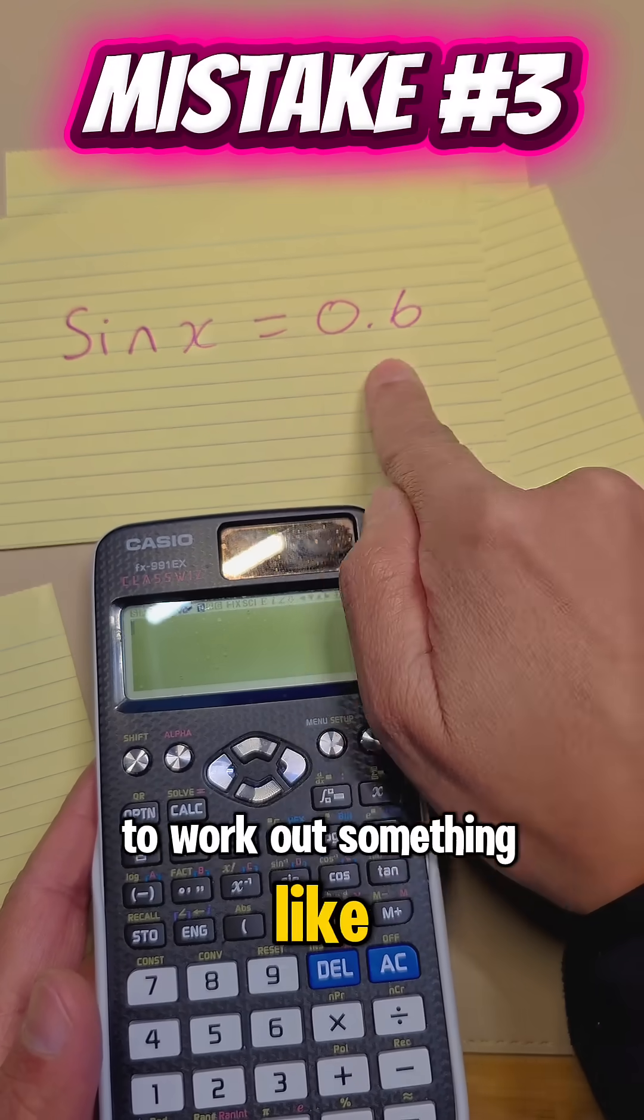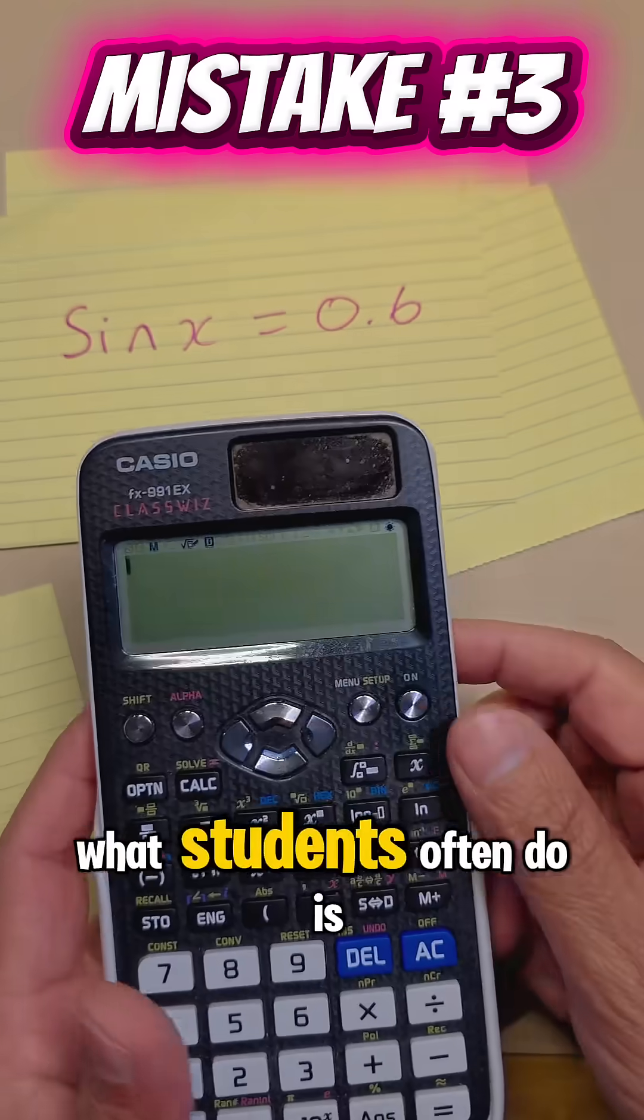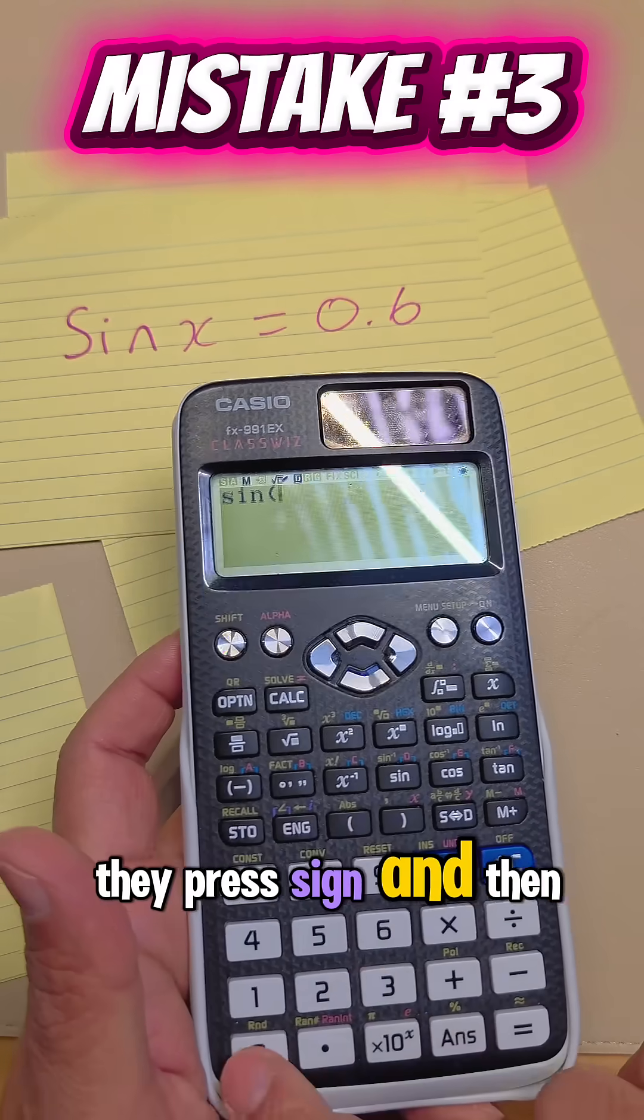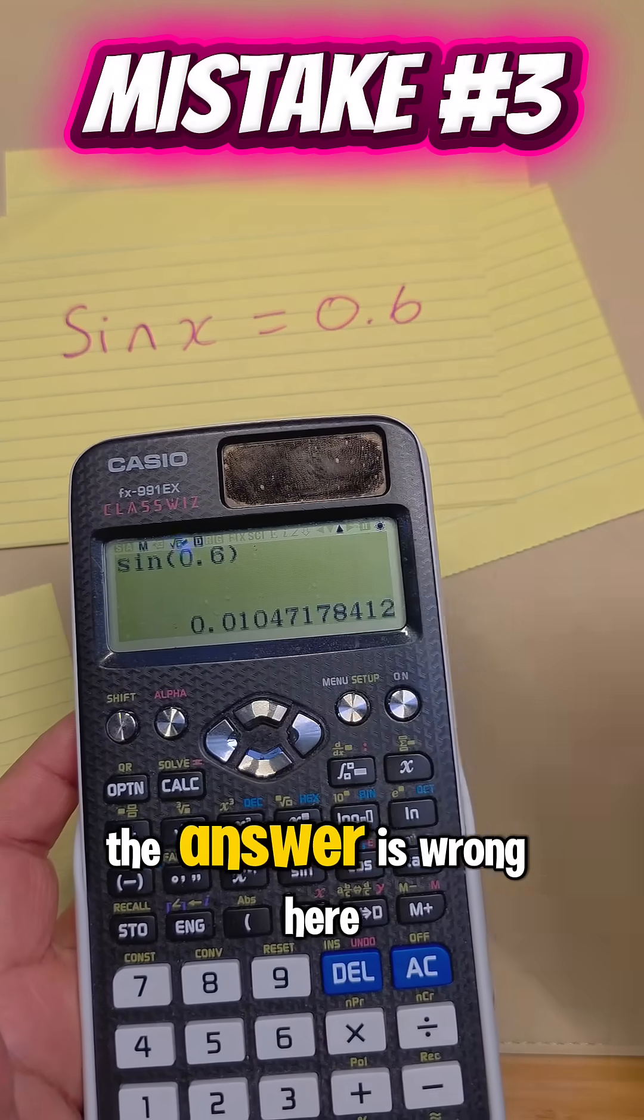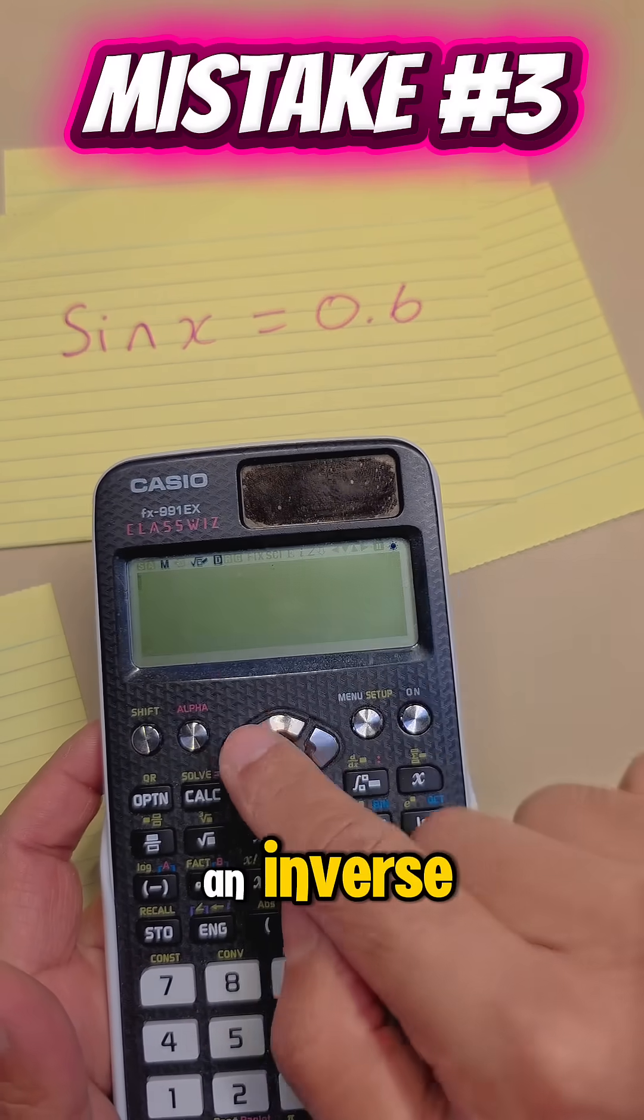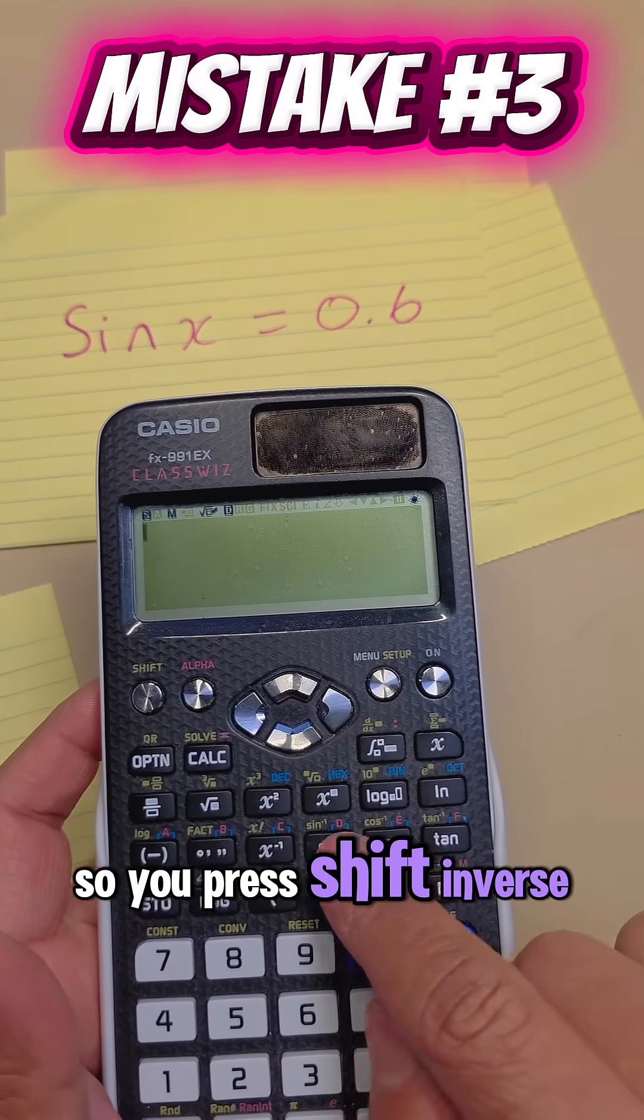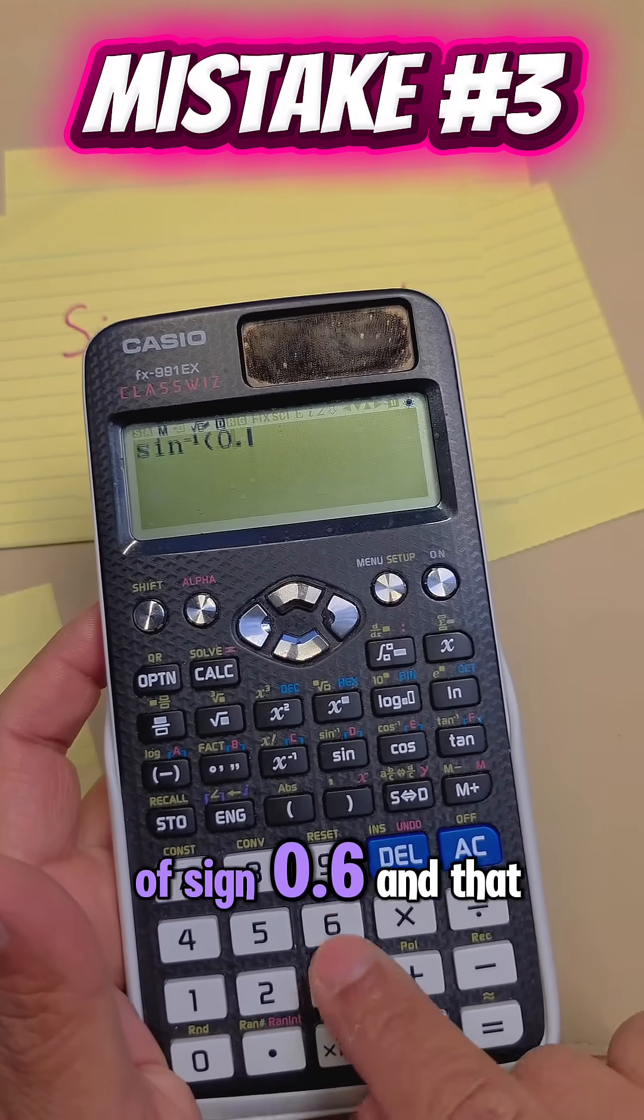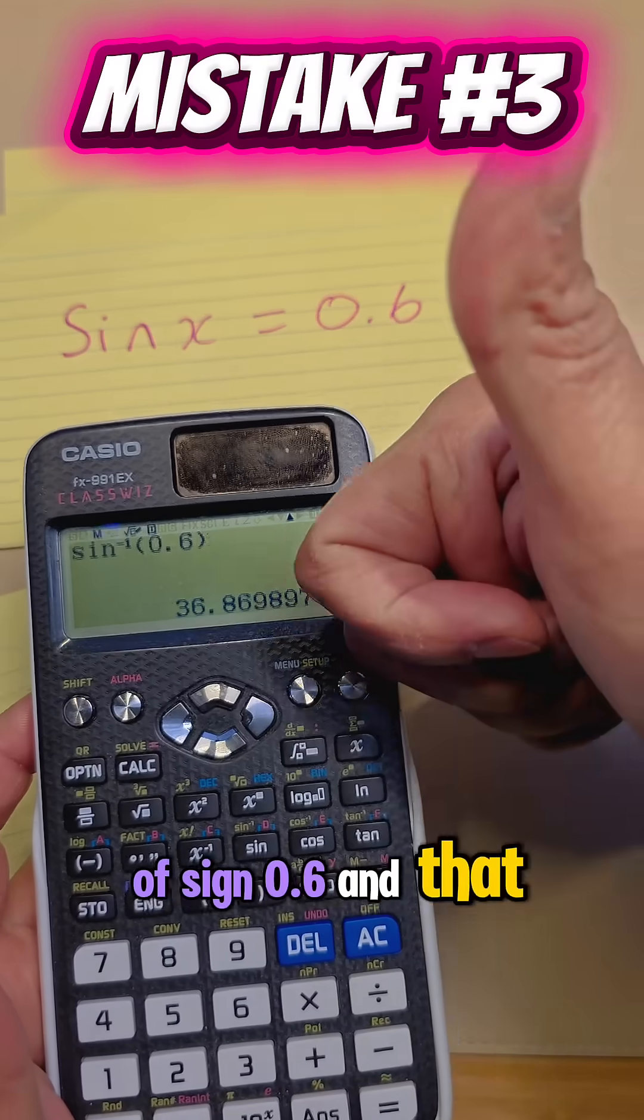The next one is trying to work out something like this, where you're finding an angle. What students often do is they press sine and then 0.6. The answer is wrong here. This needs to go as an inverse. So you press shift, inverse of sine, 0.6. And that is the correct answer.